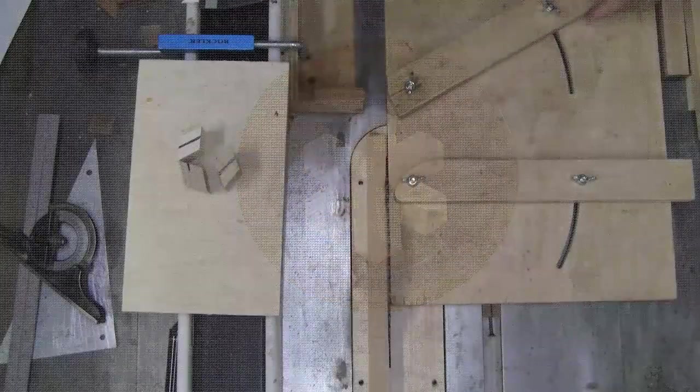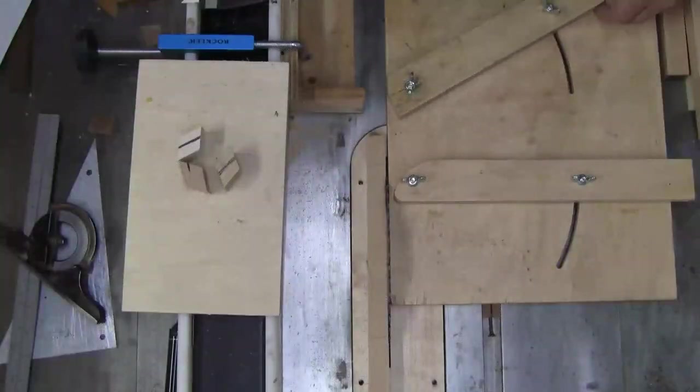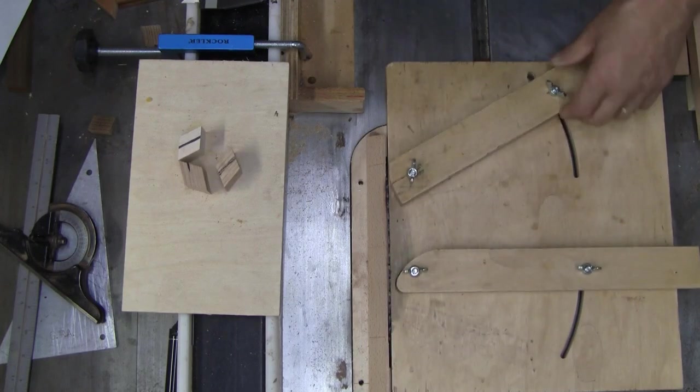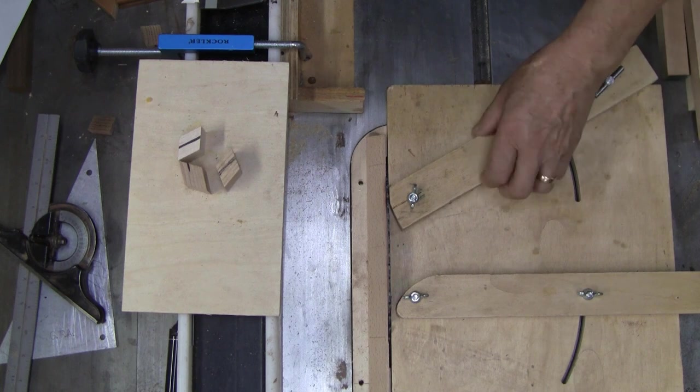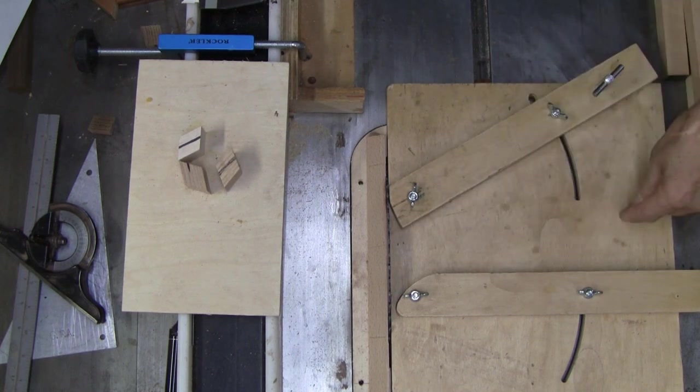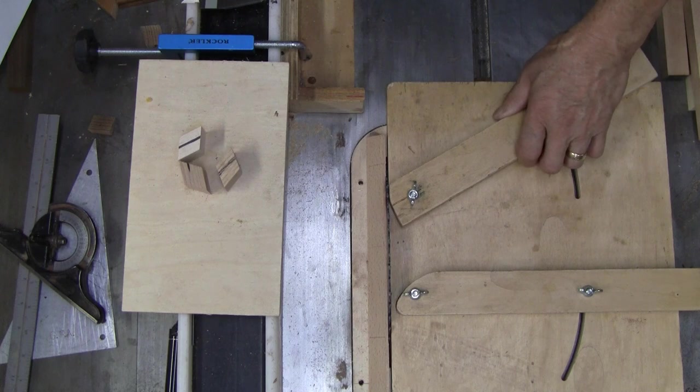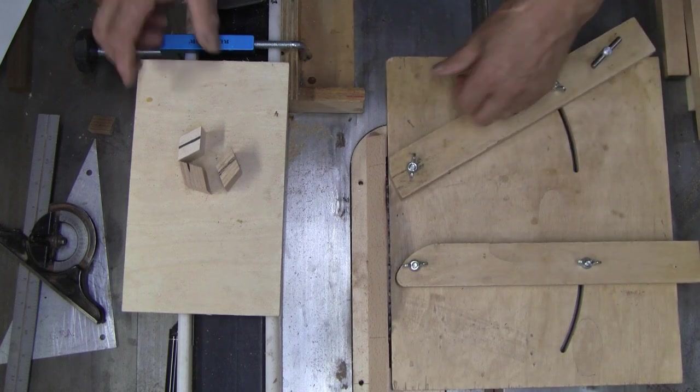One very important thing is to get this angle absolutely perfect. Off of this blade, if you come off 90, which this is, and come down 30 degrees from 90, that's what you need. That's a 30 degree angle.